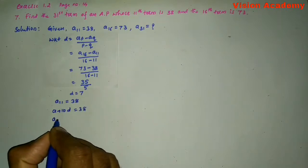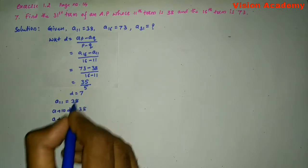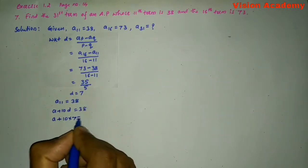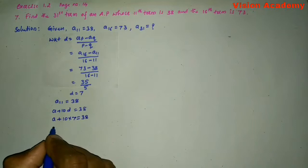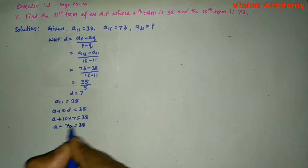So, let us write A plus 10 into common difference is 7 is equal to 38. A plus 10 sevens are 70 is equal to 38.